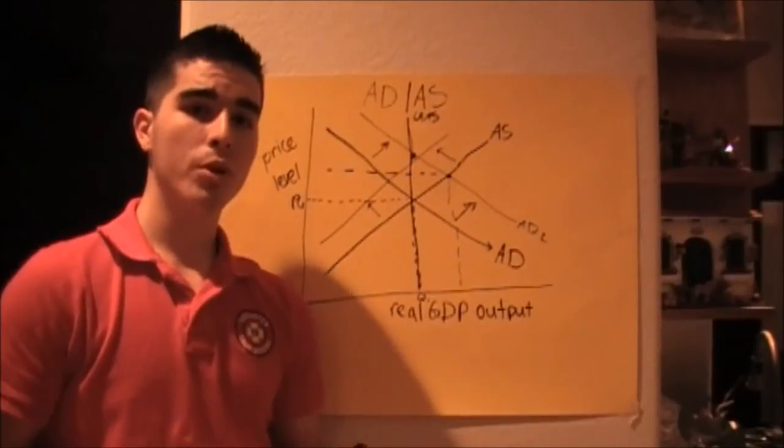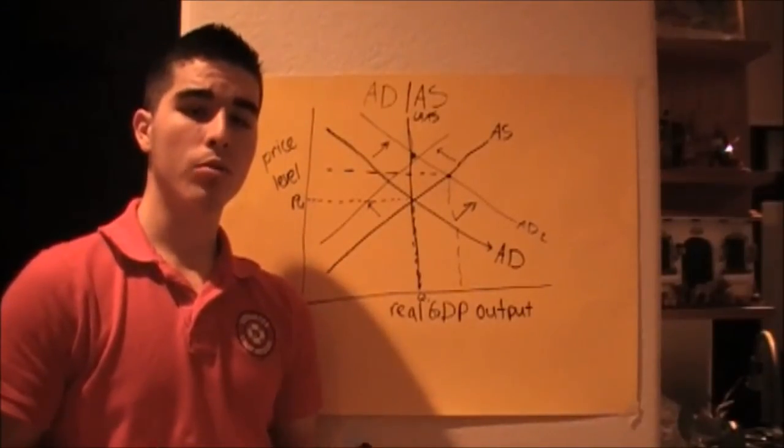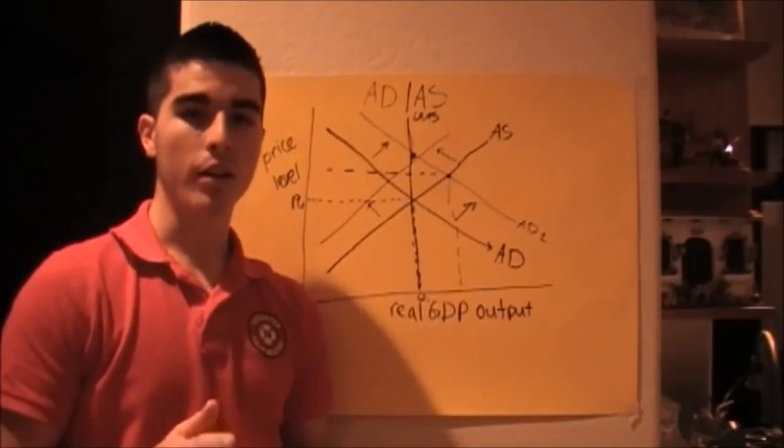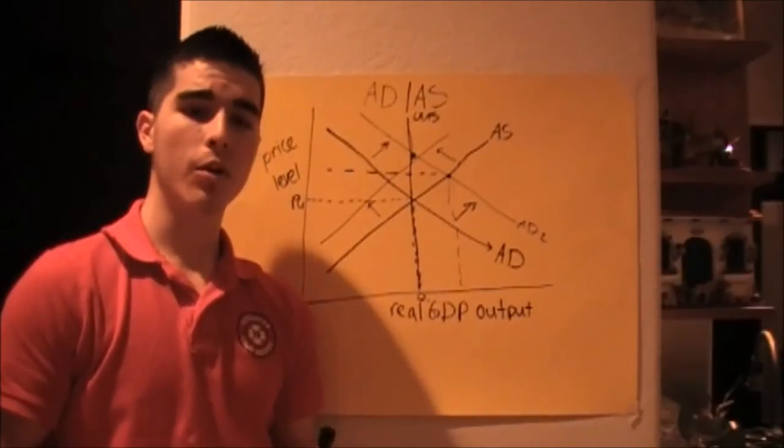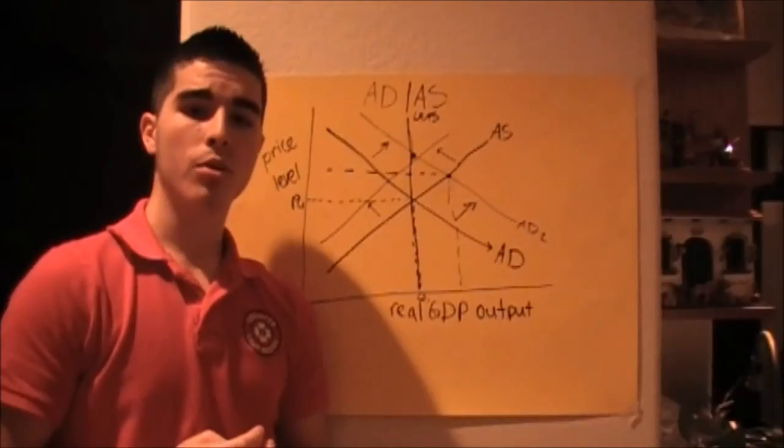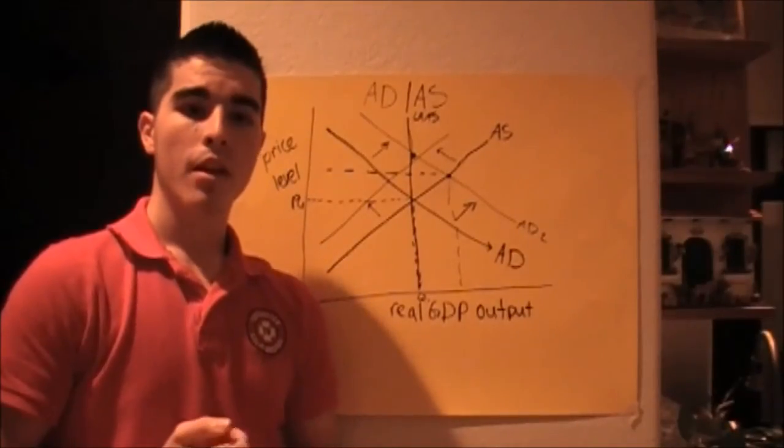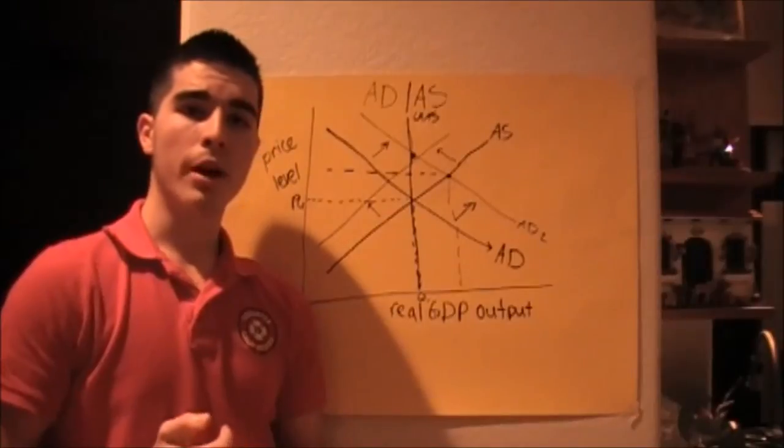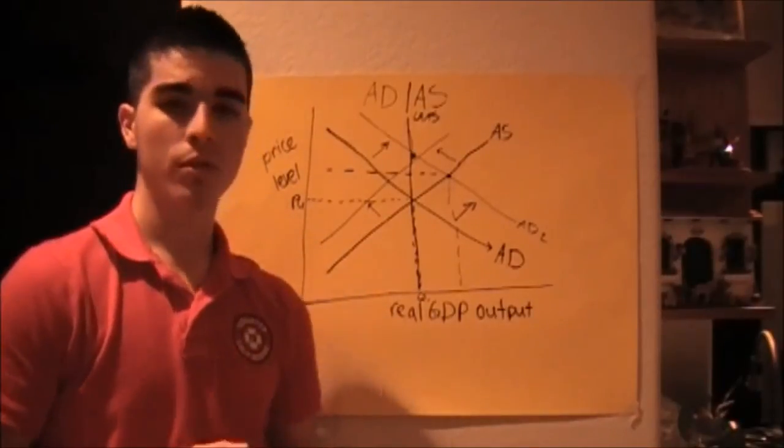Now if you're unfamiliar with discount rate and reserve ratio, it's fine. I've got it covered. The discount rate is the rate at which Federal Reserve loans money to banks. The reserve ratio is the amount banks must hold in their reserves.